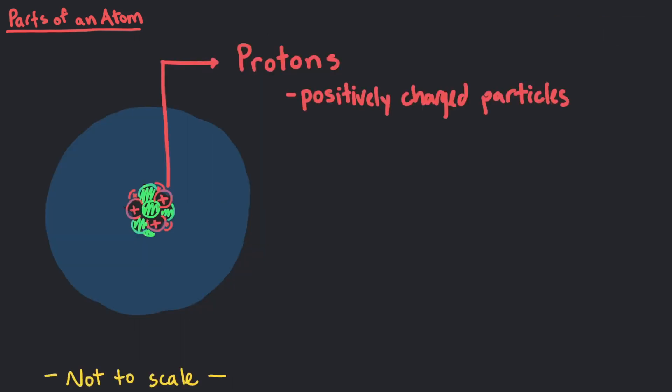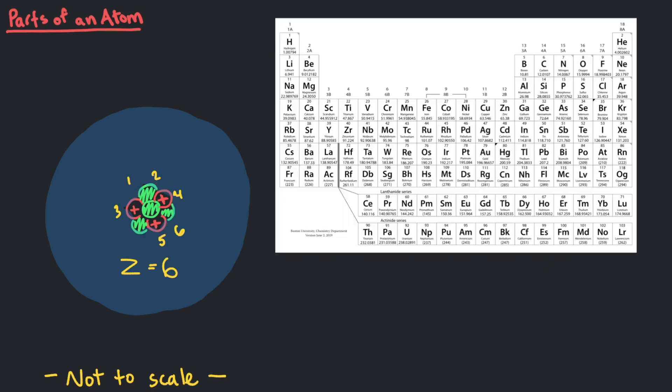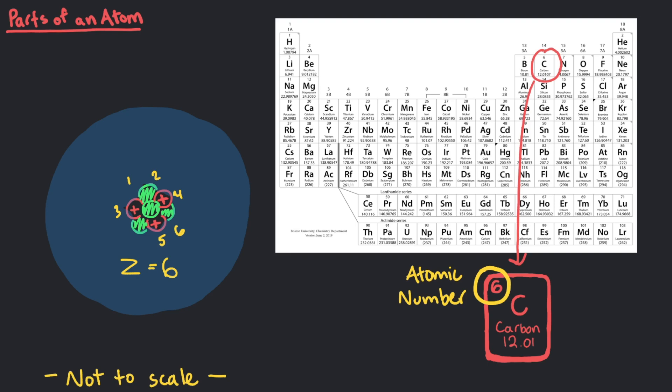Protons are positively charged particles. The number of protons in the nucleus of an atom is what determines the identity of the atom. We can find the number of protons in an atom's nucleus by looking at the atomic number, Z. So if there are 6 protons, Z is 6, we can look at the atomic number on the periodic table to see that a nucleus should have 6 protons in a carbon atom.